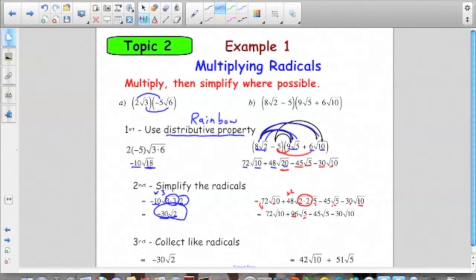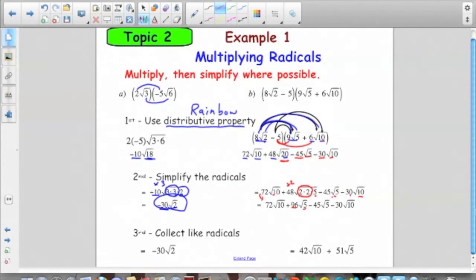So let's look for like radicals. Do you see any like radicals? Well, I see a root 10 there. And I see a root 10 there. So those are like radicals. So I bring those coefficients together. 72 take away 30 is 42. And it's 42 root 10. Then I look for the root 5 and the root 5. Those are like radicals. I bring those together. So 96 take away 45 is 51. And it's root 5. And there's my answer.